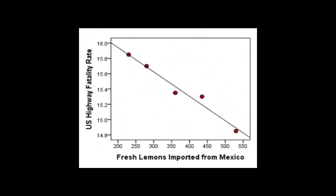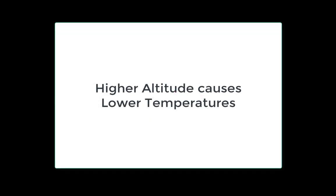Something like altitude and temperature — those two things are directly related. As the higher you get on a mountain, the colder the temperature will be. So there's a direct causation there: higher altitude indicates lower temperature.